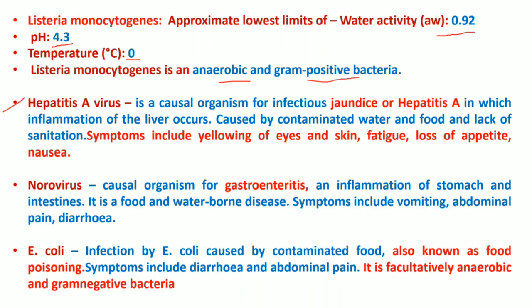Hepatitis A virus is the causative organism for jaundice or hepatitis A, in which inflammation of the liver takes place, caused by contaminated water and food and lack of sanitation. Symptoms involve yellowing of skin and eyes, fatigue, loss of appetite, and nausea. Norovirus is the causative organism of gastroenteritis — inflammation of the stomach and intestine — and symptoms include vomiting, abdominal pain, and diarrhea. E. coli infection comes from contaminated food and also causes diarrhea and abdominal pain; it is a facultatively anaerobic gram-negative bacteria.